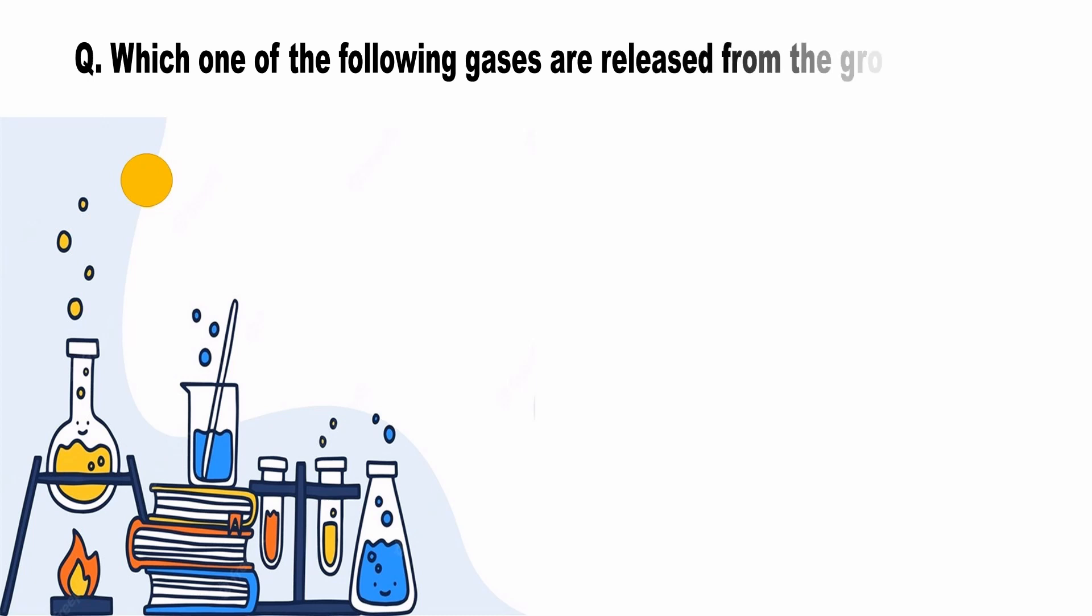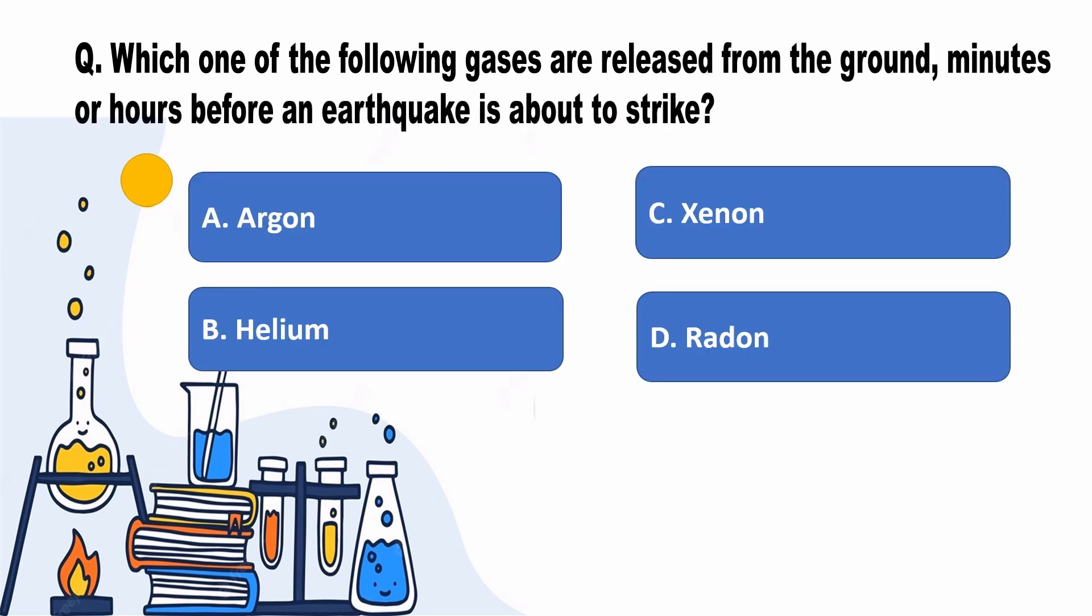Which one of the following gases are released from the ground minutes or hours before an earthquake is about to strike? Answer D, Radon.